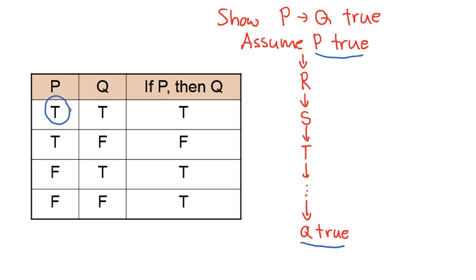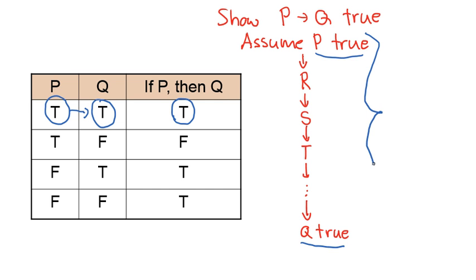We used a series of deductions to show that implies that Q must be true. So we have a true hypothesis, it implies we have a true conclusion. True hypothesis, true conclusion — so the overall conditional statement P implies Q must be true. That process of assuming a hypothesis is true and using a series of deductions to show that the conclusion must be true is called a direct proof.